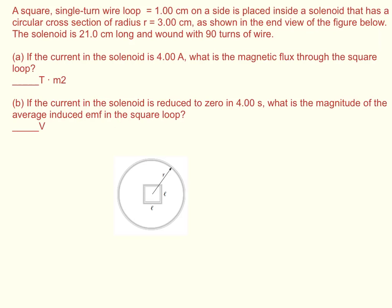A square single-turn wire loop of one centimeter on a side is placed inside a solenoid that has a circular cross-section of radius r equals three centimeters,